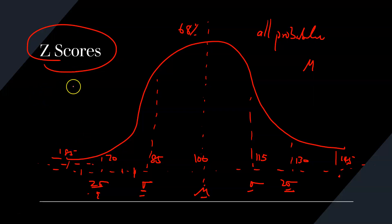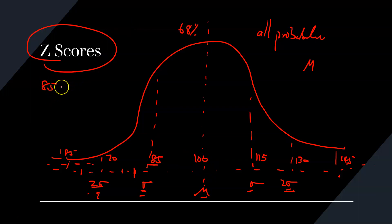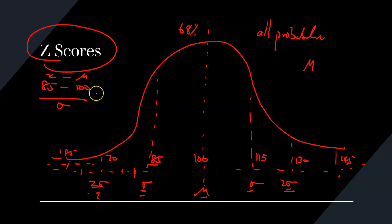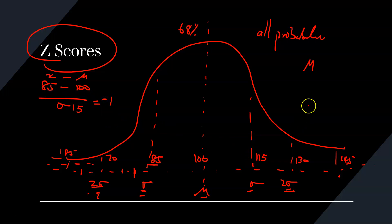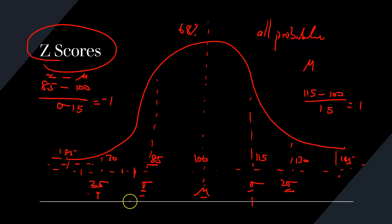How we calculate the Z score: we take the actual data we're interested in — say 85 — minus the mean, divided by the standard deviation. So it's 85 minus 100 over 15, and you will get minus 1. In the same way, 115 minus 100 divided by 15 gives us 1. So the Z score at the first standard deviation is 1, and technically minus 1 on the other side.